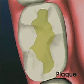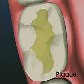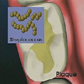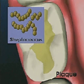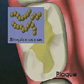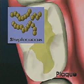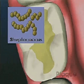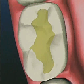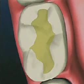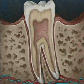Some of the bacteria, including species of Streptococcus and Lactobacillus, produce acids when they digest sugar, their favorite food. The plaque keeps the acid in contact with the enamel, where it gradually dissolves the minerals that make the enamel hard. A cavity starts to form.